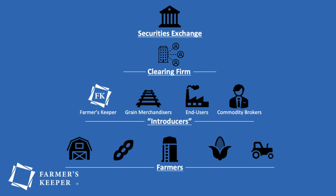Farmers grow grain and sell it through introducers, who leverage clearing firms that hold margin money as performance bonds to be traded at the exchange where buyers and sellers are paired up. Seeing that these tiers exist and where each player falls within them helps us understand what moves markets and who's involved in processing grain transactions.